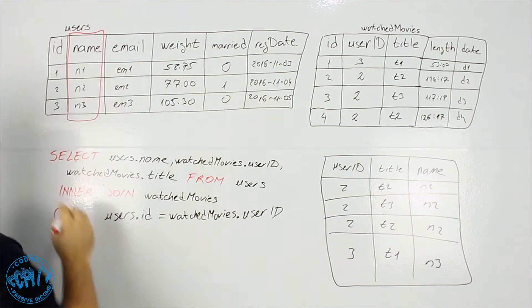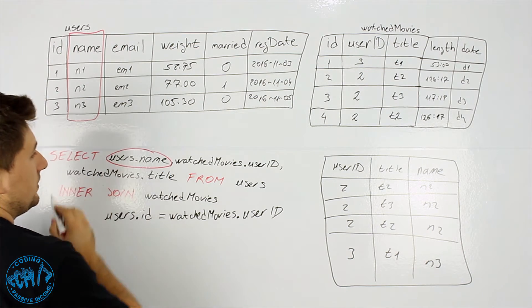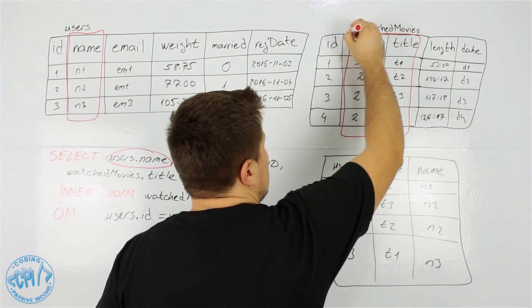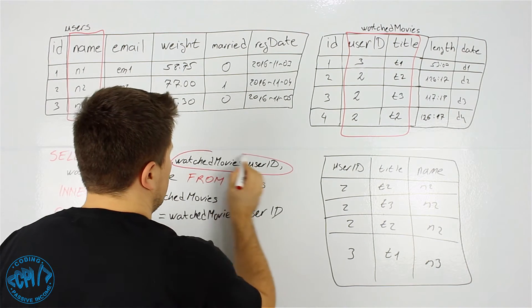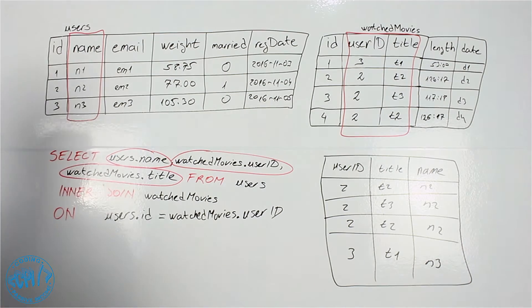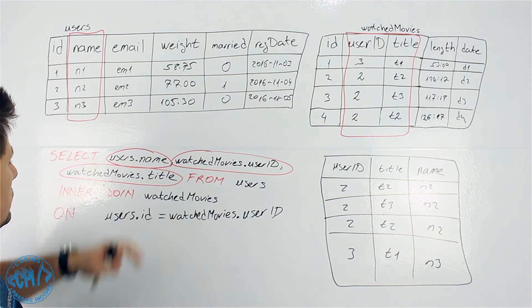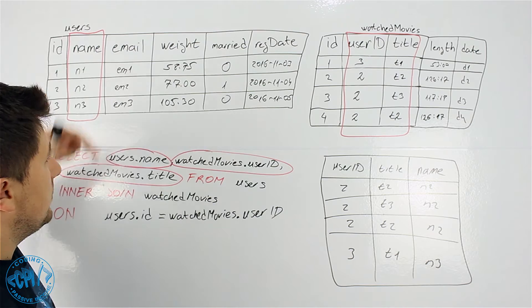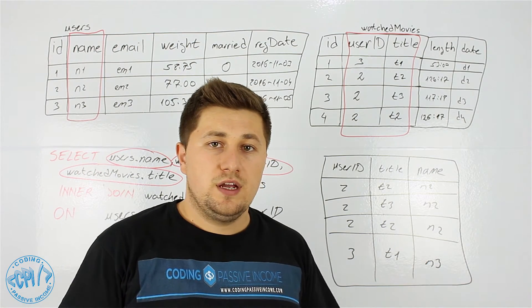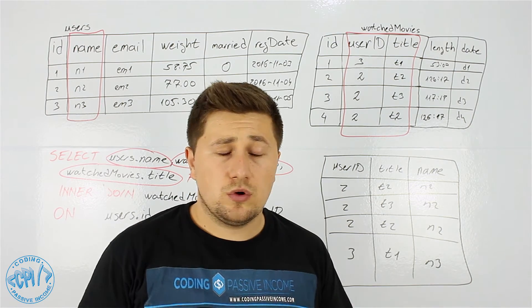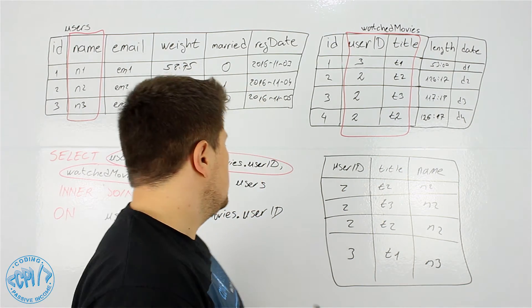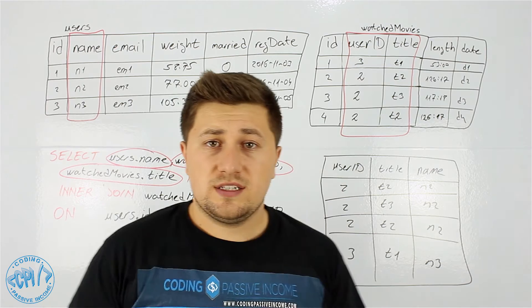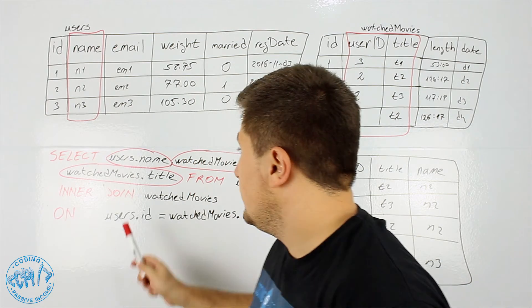As you can see, we select the name from the users table and those two columns from the watched_movies table. You could just use the column name without the table prefix, but the problem is that if two tables have columns with the same name, MySQL won't know which table to select from. So we always want to use the table.column notation.